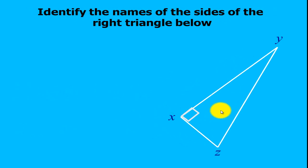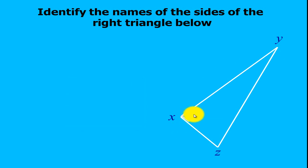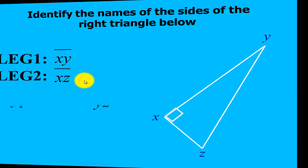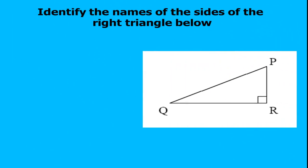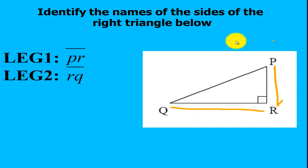For this right triangle, the names of the sides — the legs — will be segment XZ and segment XY, since those are the sides of the triangle that contain the right angle. And then for the hypotenuse, it will be segment YZ. For the next triangle, the legs will be QR and PR, and the hypotenuse will be side PQ.